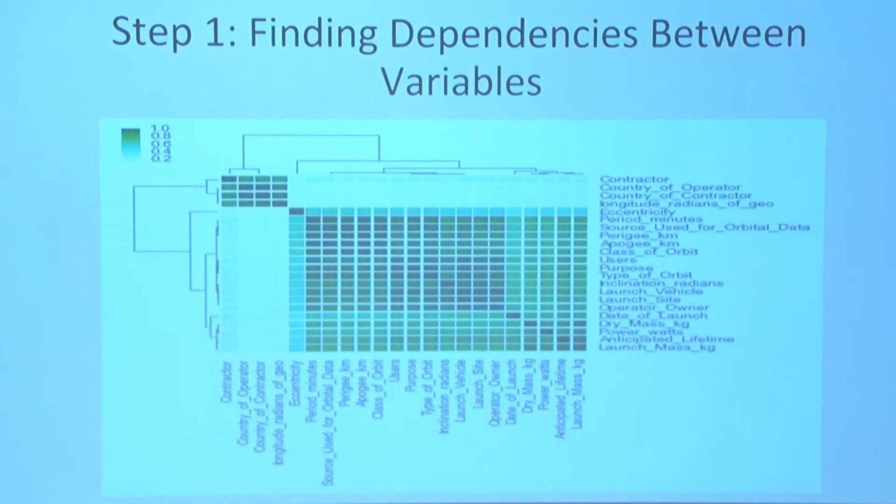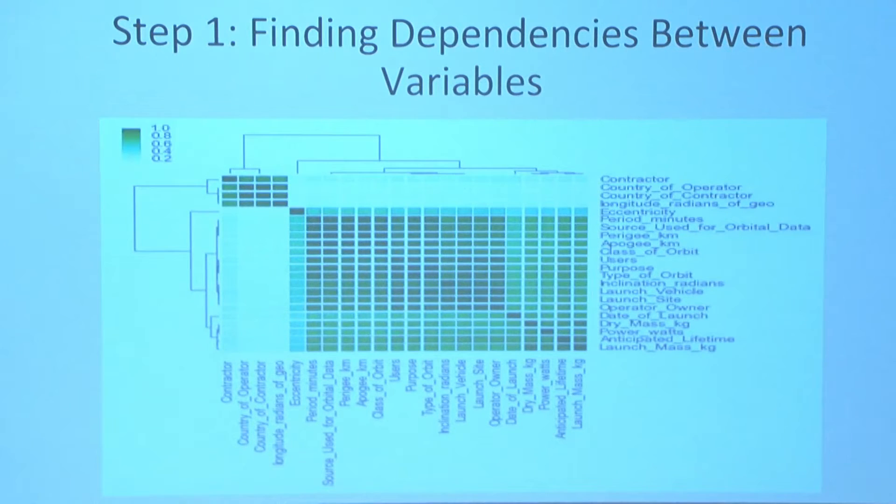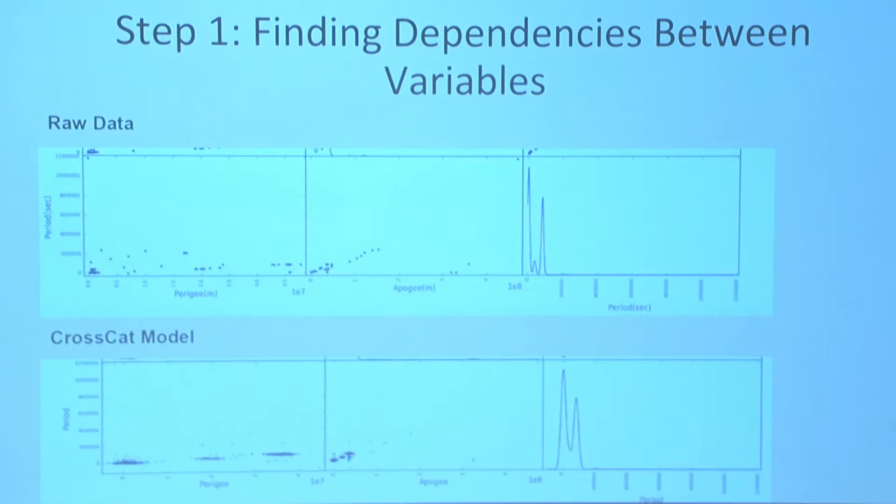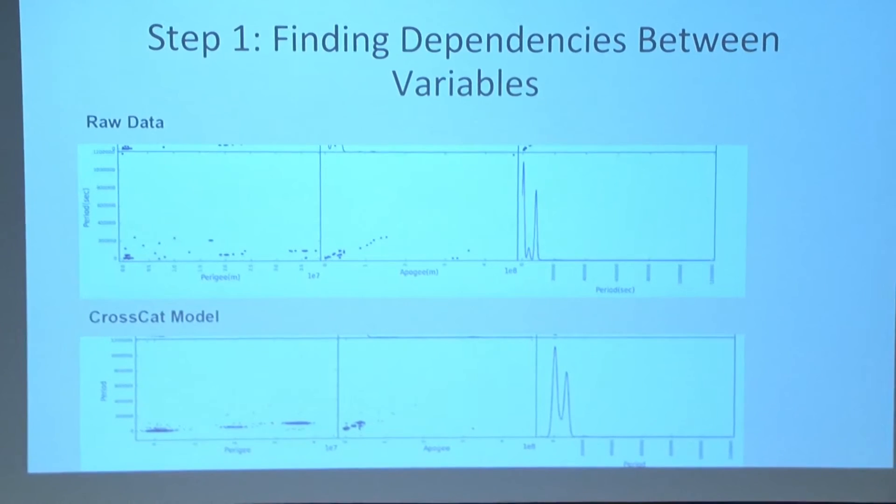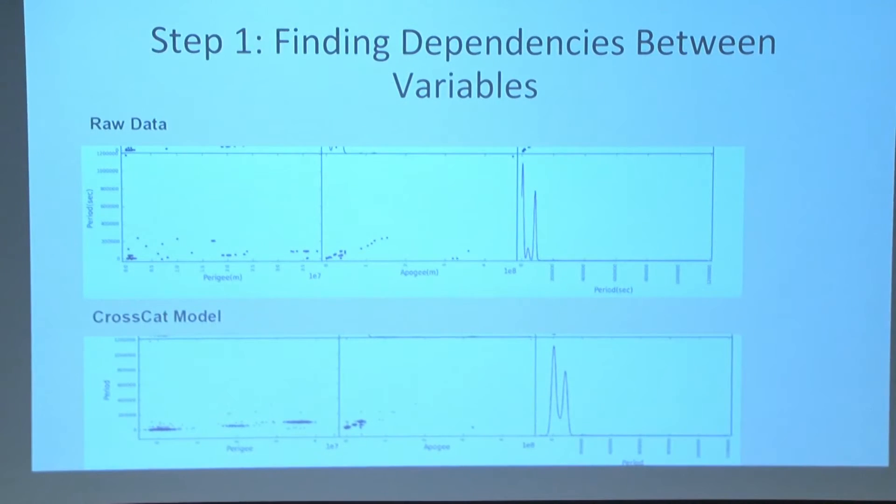So first of all, we find the dependencies between the variables. This is a heat map here. And it represents the probabilities that two different variables are actually dependent on each other. And all the dark regions over there represent really high probability dependence. And all the light regions represent really low probability dependence. So you can see that the variables of perigee, apogee, and period—perigee and apogee are the minimum and maximum distances from the Earth—and they are very, very dependent on each other. So obviously our model is doing very well. And I compared these pairwise scatterplots and the densities. And I actually found that the model was really good at figuring out the actual law without having any deterministic knowledge.